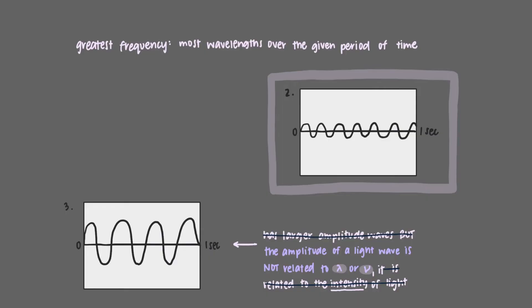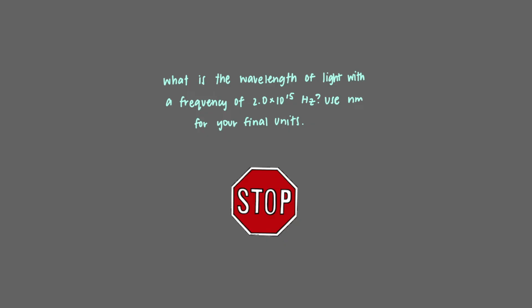Let's use our relationship between frequency and wavelength to do some calculations. What is the wavelength of light with a frequency of 2.0 times 10 to the 15 hertz? Use nanometers for your final units.